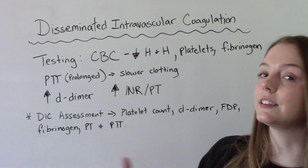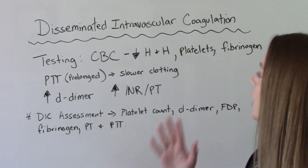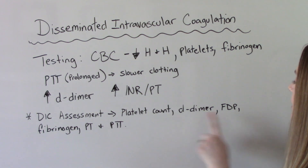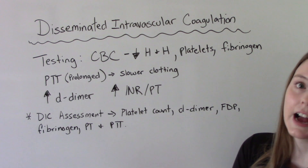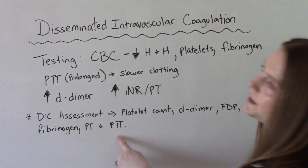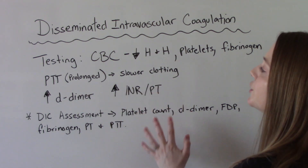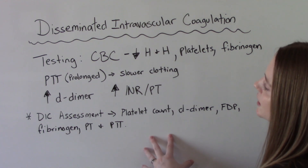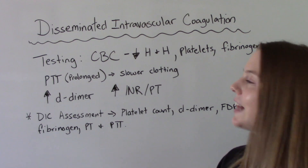A DIC lab assessment includes all of these things: platelet count, D-dimer, fibrin degradation products (which is very similar to a D-dimer), fibrinogen levels, and PT and PTT levels. These are the labs we're looking for when assessing for DIC, and they make sense because they tell us about our red blood cells and clotting factors.